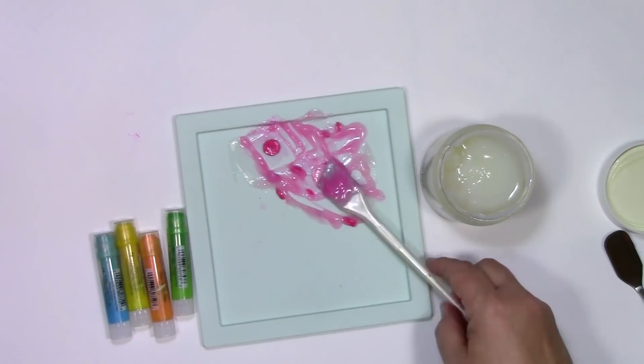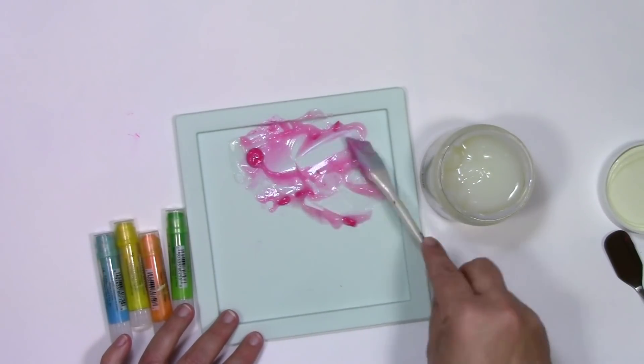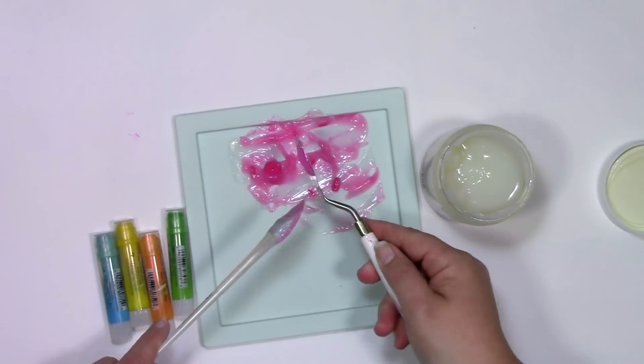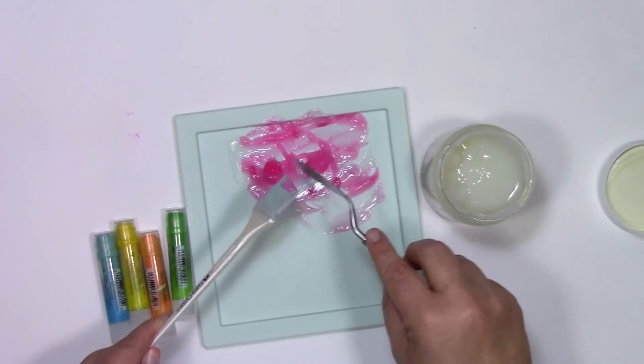When I'm using the metal spatula to mix these together, I have a little more pressure so that I can push it together very much like when making a pie crust, and you have to get the butter and flour to go together.